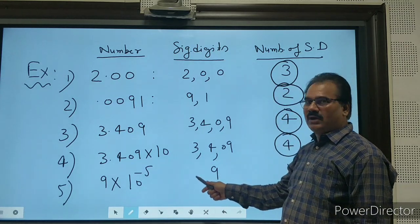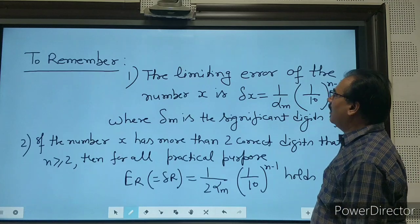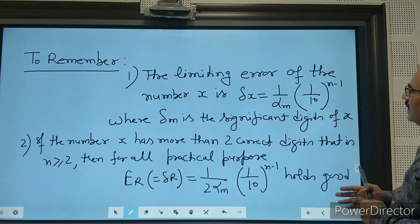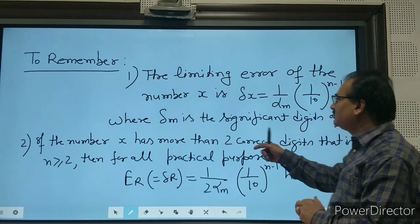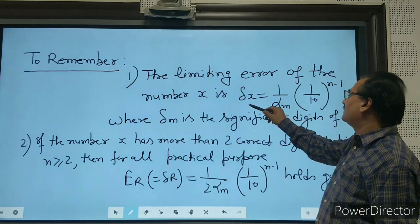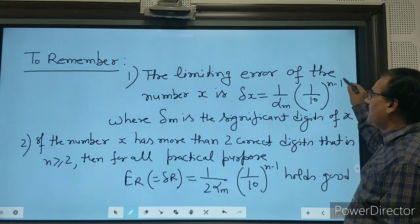The limiting error of the number x may be written as Δx = (1/2α_m) × 10^(n-1), where m is the significant digits of x.